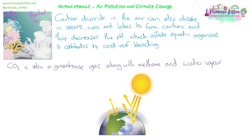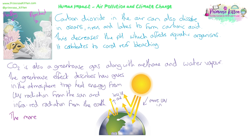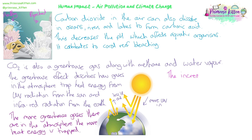The other main problem with carbon dioxide is its role as a greenhouse gas, along with methane from cattle and rice farming, and water vapour. The greenhouse effect describes how gases in the atmosphere trap heat energy from UV radiation from the sun and infrared radiation reflecting back from the Earth. More UV radiation enters the atmosphere and less infrared radiation leaves because it's being trapped and absorbed by these greenhouse gases.